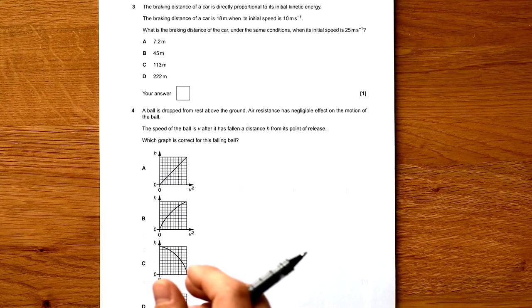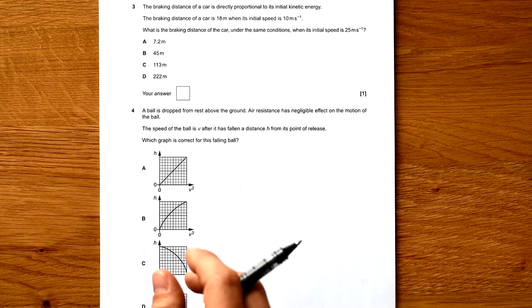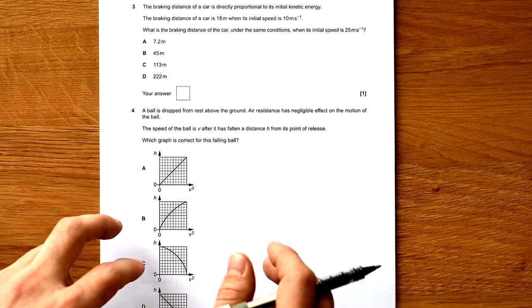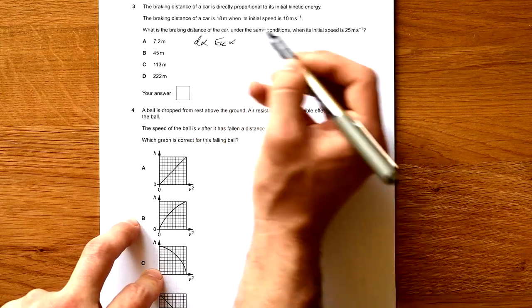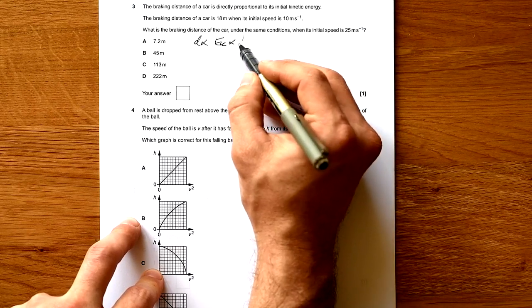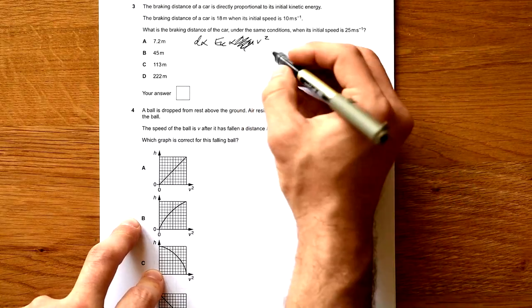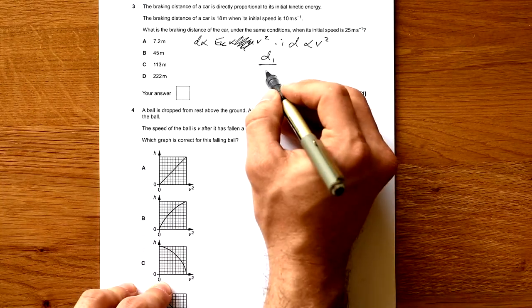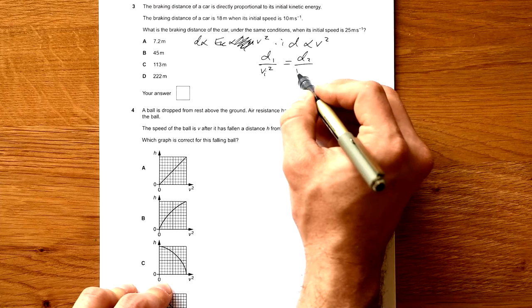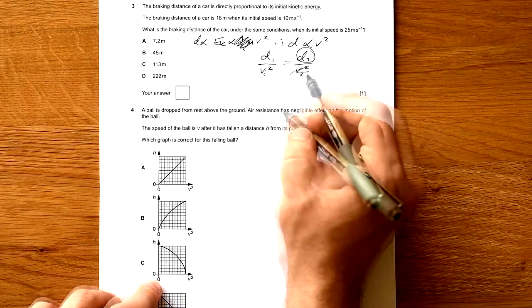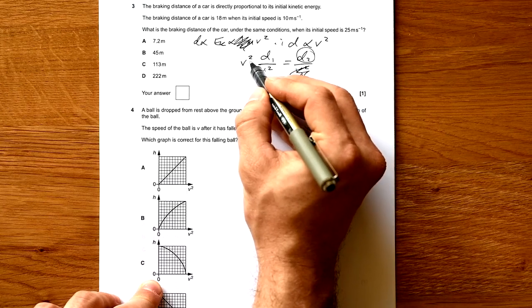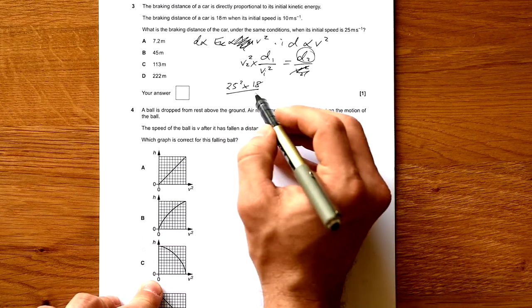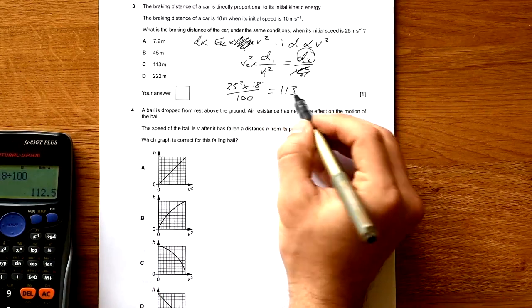Question 3: Braking distance of a car is directly proportional to its initial kinetic energy. Braking distance is 18 meters when initial speed is 10 meters per second. What's the braking distance when initial speed is 25 meters per second? We know that distance is proportional to Ek and Ek equals half mv squared. The mass is staying the same so D is proportional to v squared. So D1 over v1 squared equals D2 over v2 squared. D2 equals 25 squared times 18 divided by 10 squared which is 100. That gives us 113 meters.